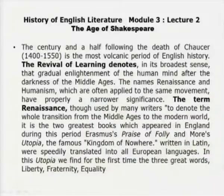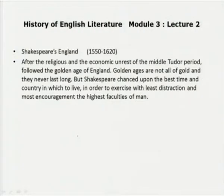In Utopia, we find for the first time the three great words: liberty, fraternity, equality. The entire meaning of literature, from being just imitative in the middle ages, had come to become something where the national fabric and the national spirit of identity came into significance.